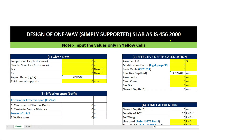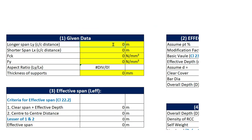This is the Excel sheet which I have prepared for the design of one-way slab, and this one is the simply supported case. All you need to do is to input the values in the yellow cells. We have a one-way slab of length 6 meters, width 3 meters. Let's use M20 grade of concrete and Fe415 steel, according to which FCK shall be 20 and Fy will be equal to 450 Newton per mm square. The thickness of the supports or walls is 230 mm.